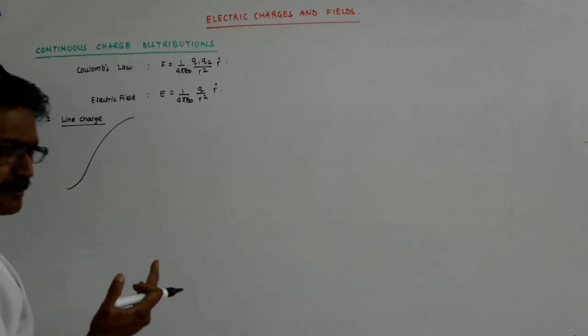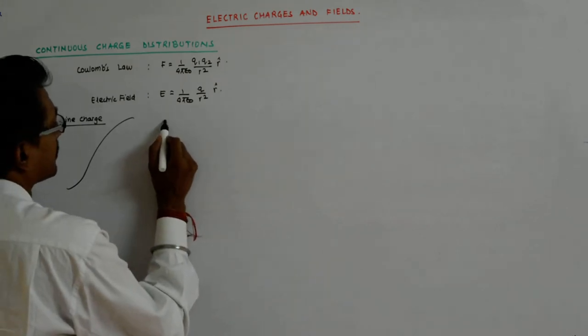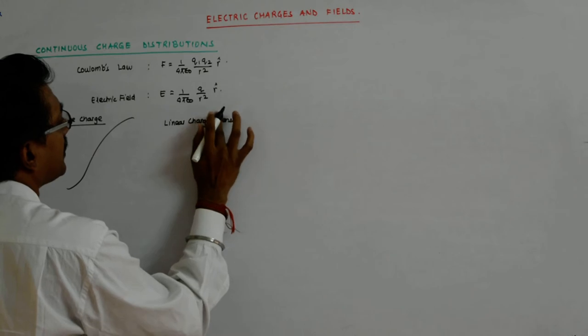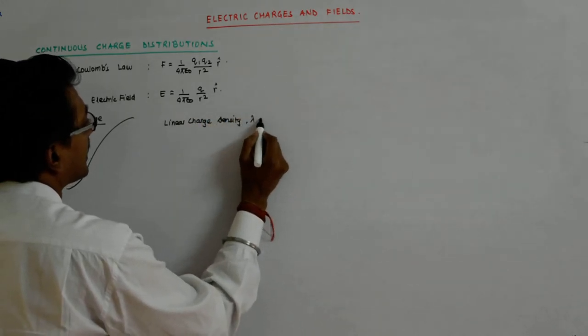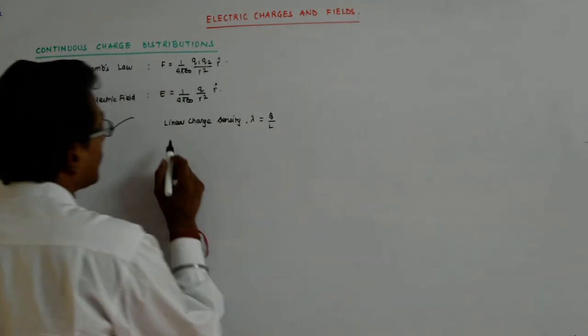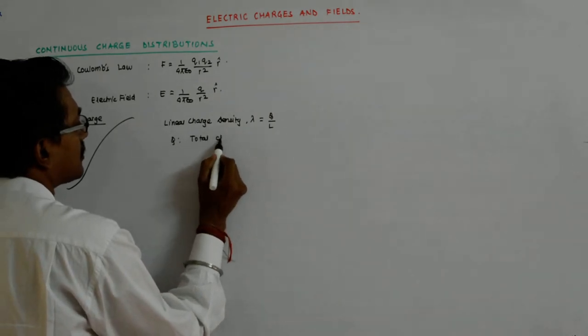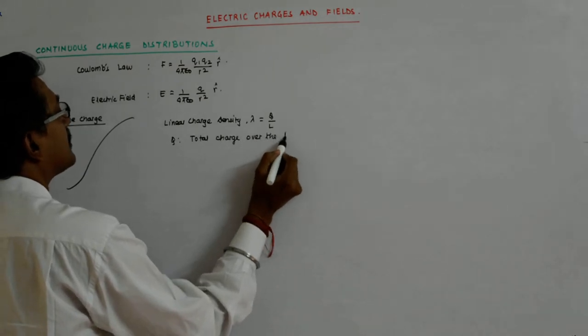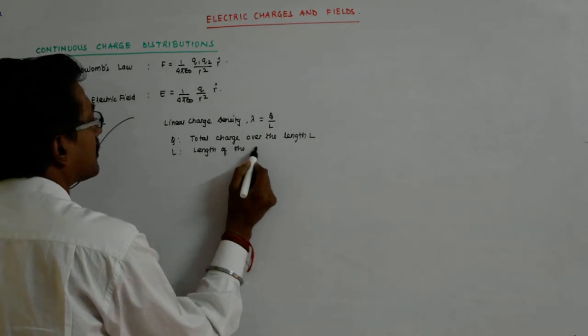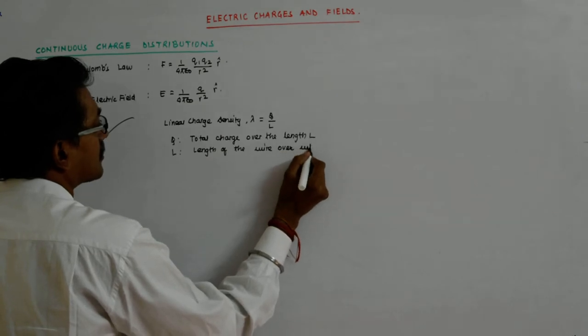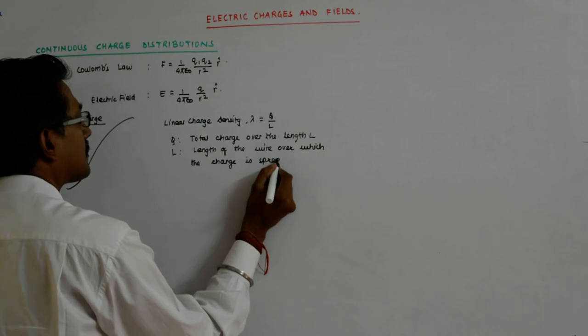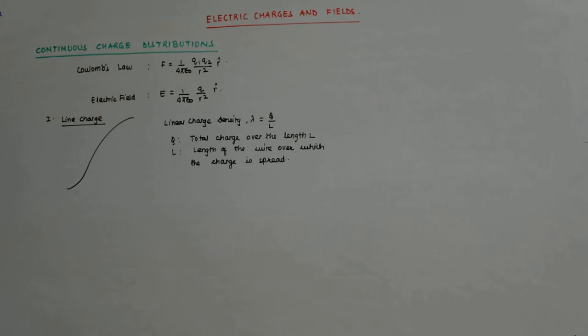Now, how much charge has been spread per unit length? That is what is called the linear charge density. So what will it be? It is denoted by lambda and is given by Q upon L. If Q amount of charge is spread over, where Q is the total charge over the length L, L is the length of the wire over which the charge is spread.